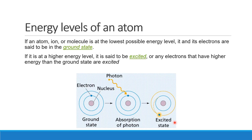The ground state is the lowest energy state. The excited state refers to the higher energy levels. When a photon is absorbed by the electron, it transitions to a higher energy level — that is why we call it the excited state.